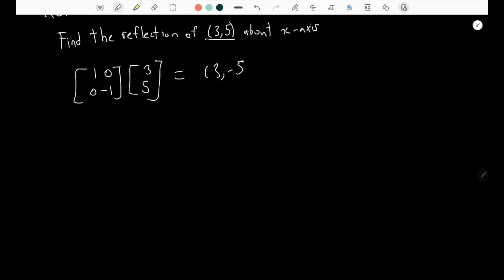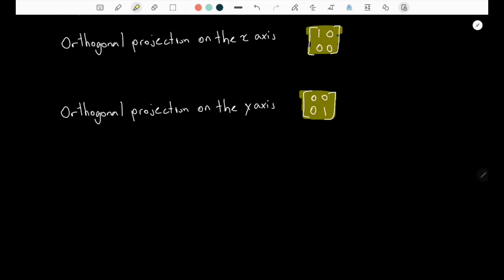Now let's look at projection operators. There are two types of orthogonal projections which are on the x-axis and the y-axis, and the standard matrices for both of these you have to remember and memorize.